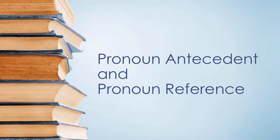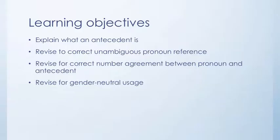Pronoun antecedent and pronoun reference. Learning objectives: explain what an antecedent is, revise to correct unambiguous pronoun reference, revise to correct number agreement between pronoun and antecedent, and revise for gender-neutral usage.